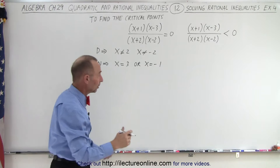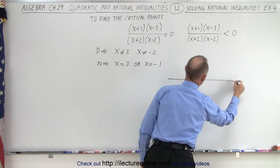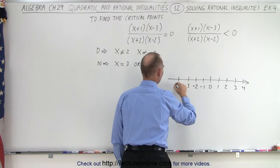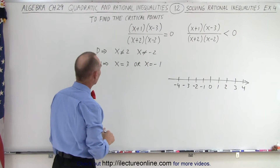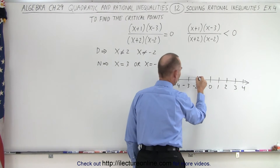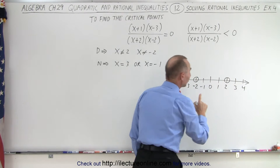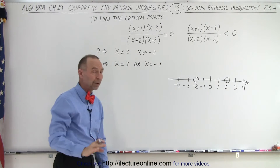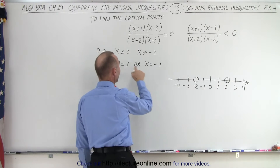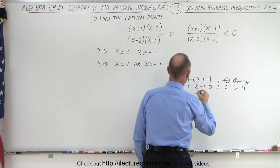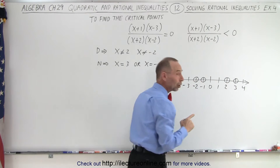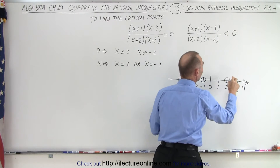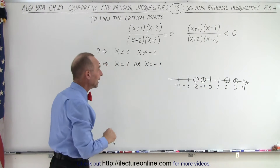We're now ready to put those critical points on a number line. All the critical points are two, negative two, three, and negative one. We put open circles around those. Notice I'm not going to color them in because two and negative two cannot be part of the solution. We also leave three and negative one open because we have strictly less than zero, not less than or equal to zero, so those endpoints are not included.